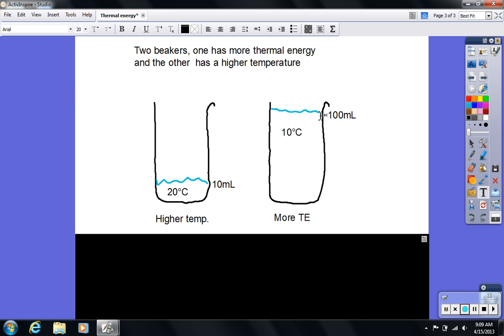There's 10 times as much water in Beaker B, meaning 10 times as many water molecules. However, Beaker A has only twice the temperature of Beaker B. And so again, going back to the money example,